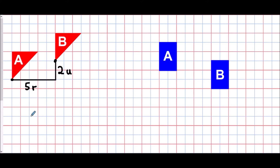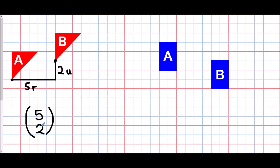Five units right and two units up is a perfectly acceptable description, but we should move on to a slightly different representation called a column vector. A vector is very similar to a coordinate — I've drawn a pair of brackets and inside we have two numbers. This translation would be written as five on top and two below. It looks different to a coordinate because there's no comma and the numbers are on top of each other, but it's the same idea: the first value is the x direction and the second value is the y direction.